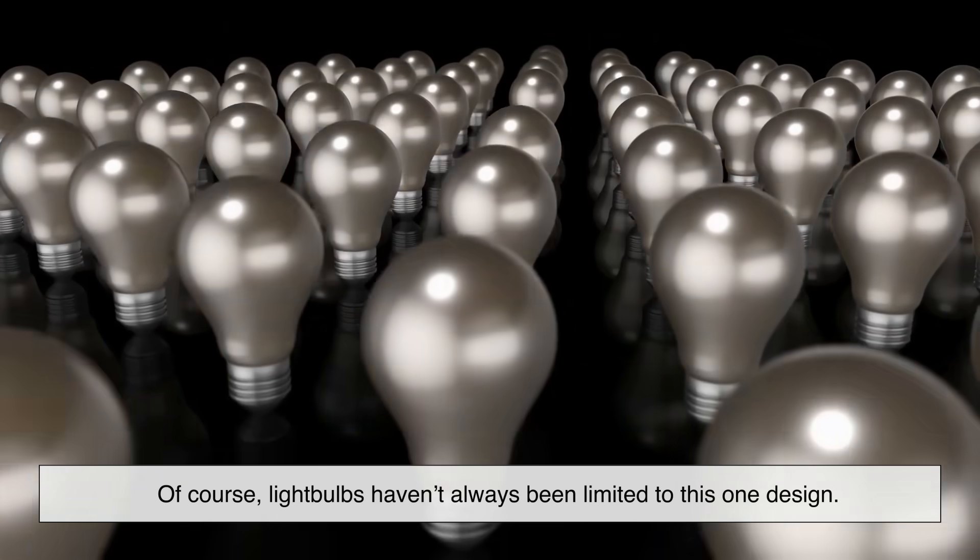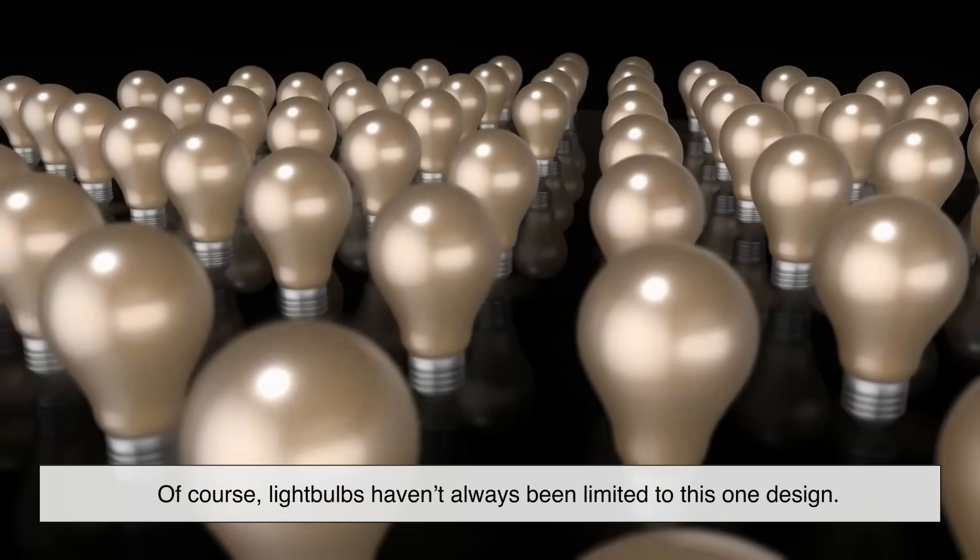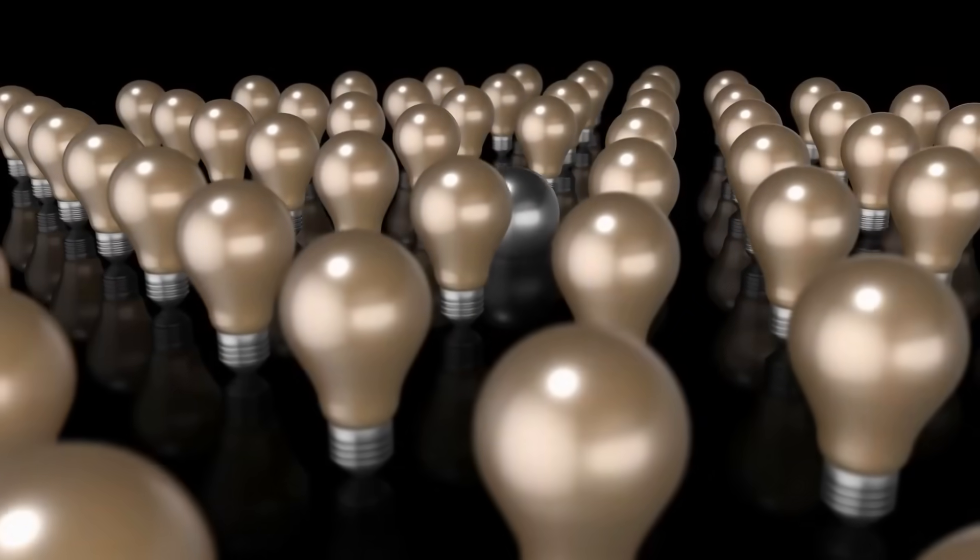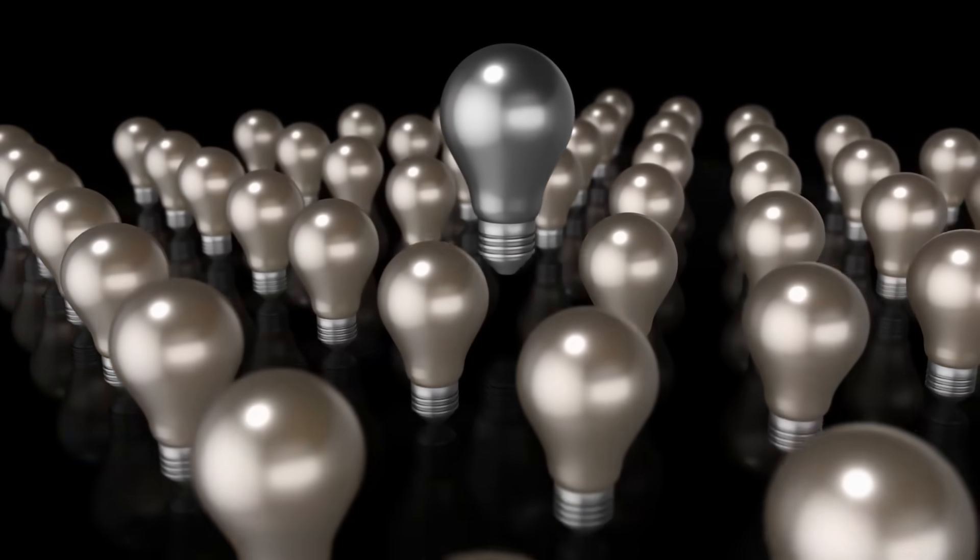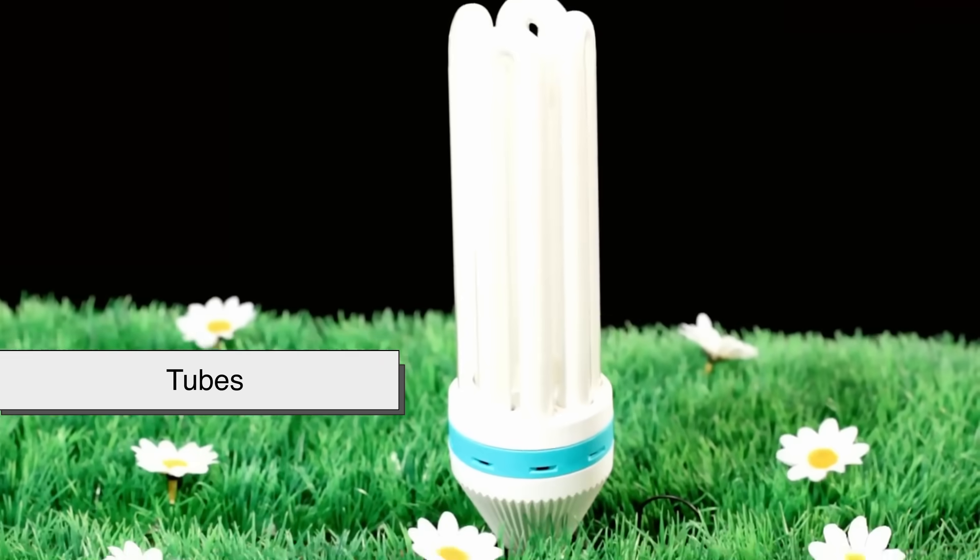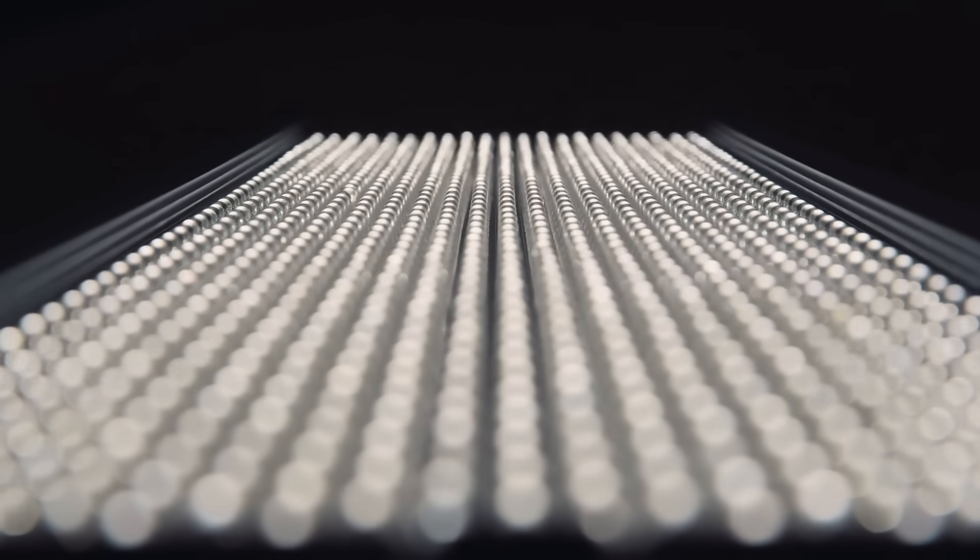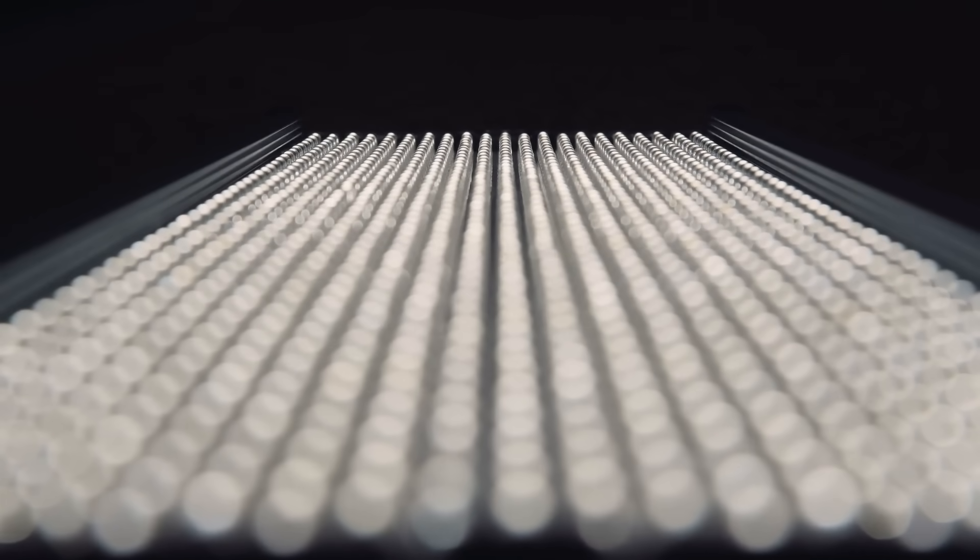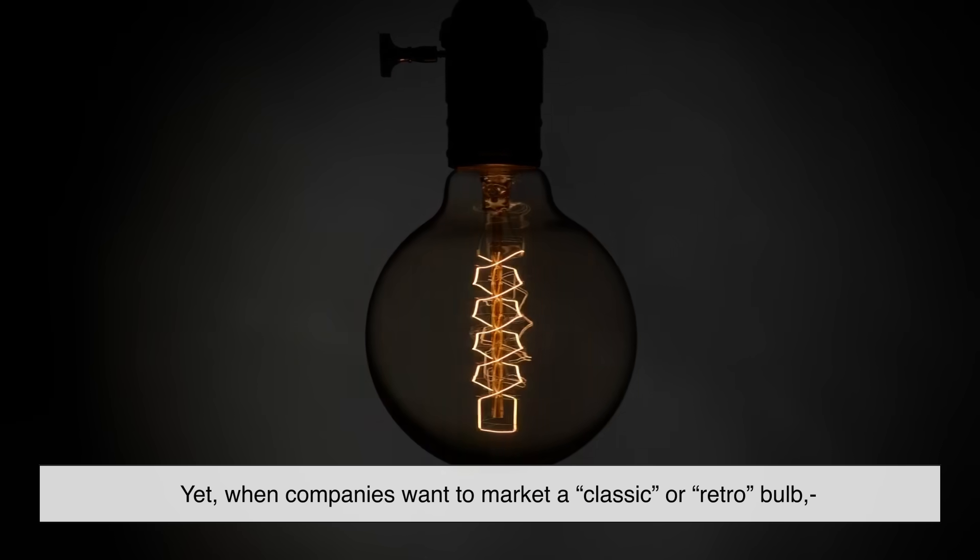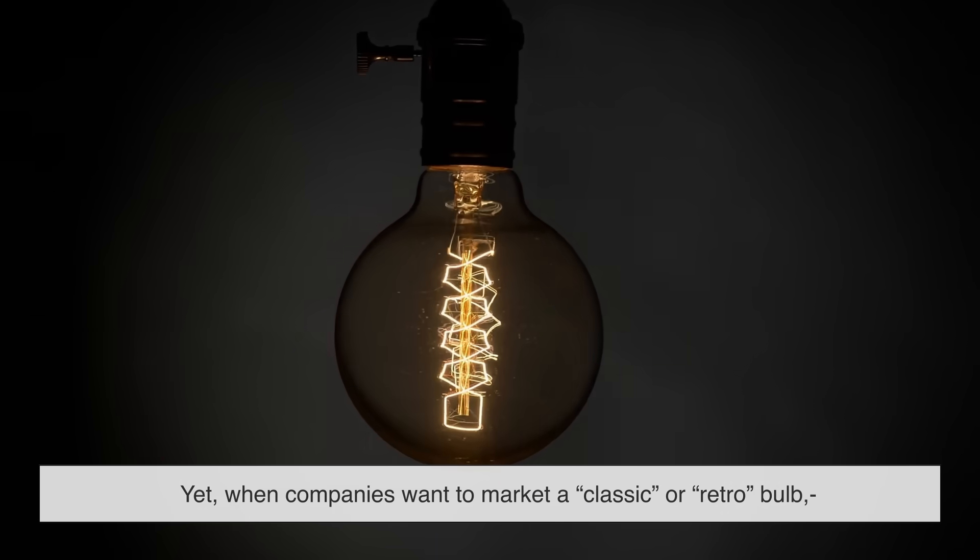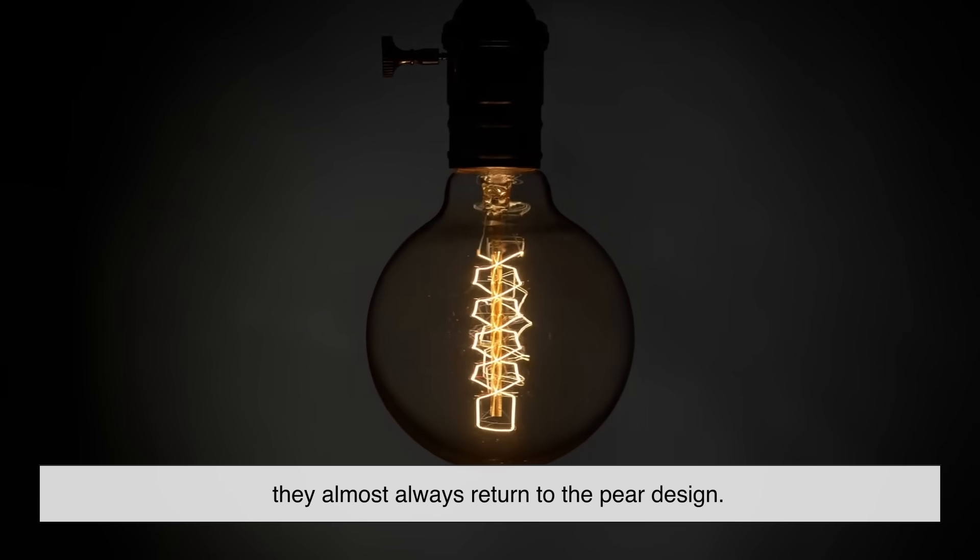Of course, light bulbs haven't always been limited to this one design. Over the years, manufacturers experimented with globes, tubes, spirals, and more. Today's LEDs and CFLs don't even need the traditional shape to function. Yet when companies want to market a classic or retro bulb, they almost always return to the pear design.